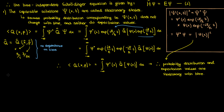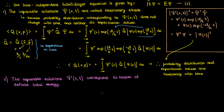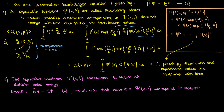It's because the probability distribution and expectation values are all stationary with time. The next important point is that these separable solutions correspond to states of fixed total energy. To see why, let's bring up the time-independent Schrödinger equation in energy form, which is equation 2. We know the separable solutions correspond to stationary states, so their expectation values are fixed in time and can be written using just the solution of the time-independent Schrödinger equation.